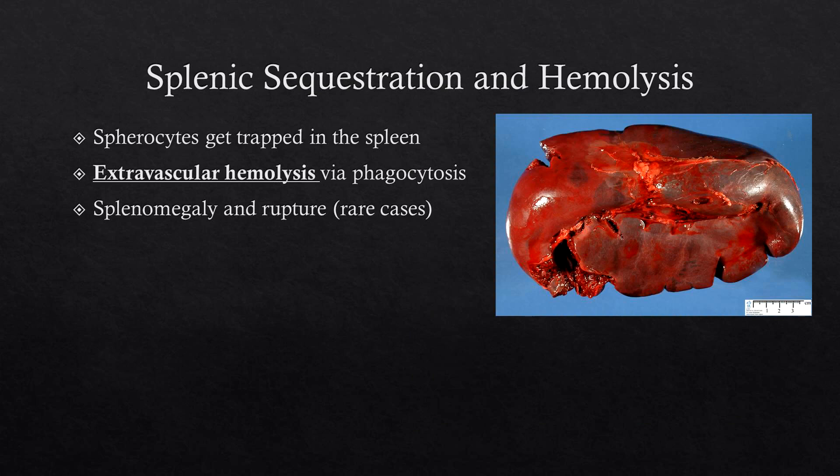This becomes a hemolytic anemia through splenic sequestration. Normal RBCs are biconcave discs, which makes them thinner in the center and more flexible — they can bend in the vasculature and capillaries. However, spherocytes are essentially perfectly spherical and cannot bend as well as biconcave disc cells, which causes them to get trapped in the splenic vasculature.